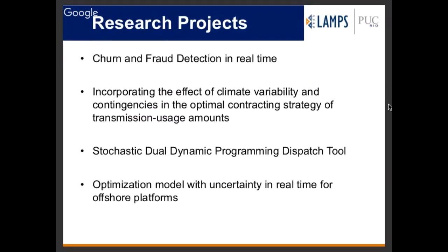Just some of our commercial projects. We know Julia and JuMP have a very successful history in academic research, but we also have very successful commercial projects using them. The common thing about all these projects is they all use Julia and JuMP, and they all involve huge datasets. For example, the first one is churn and fraud detection for credit card companies — imagine the number of transactions those companies have in one day.